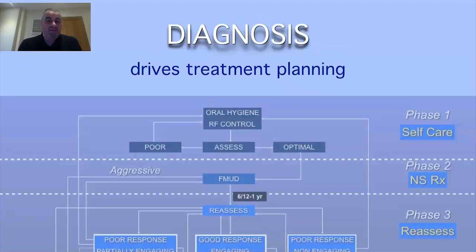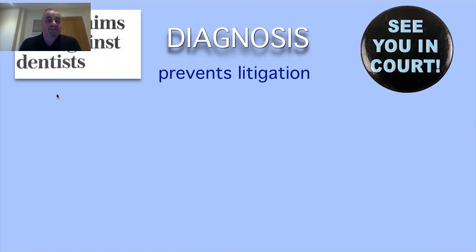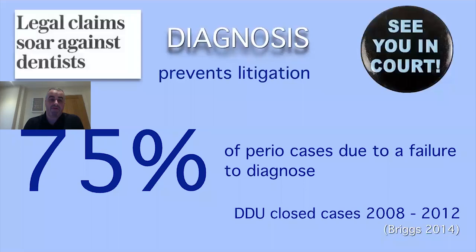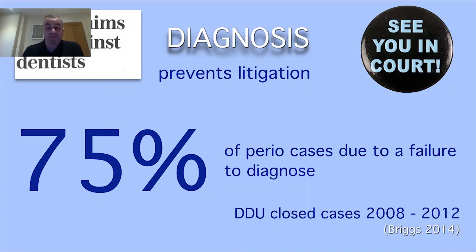A diagnosis drives a comprehensive treatment plan — we shouldn't treat patients without one. Importantly, a diagnosis also prevents litigation. 75% of perio cases that the DDU looked at between 2008 and 2012 were down to failure to diagnose and adequately treat periodontitis. So a diagnosis is not just clinically important for treatment planning, but critical to prevent future litigation.